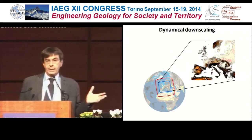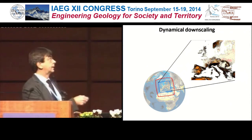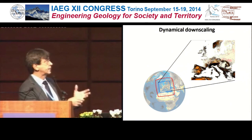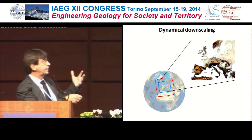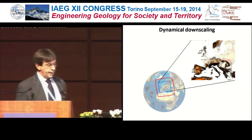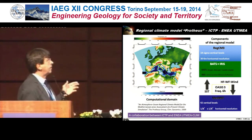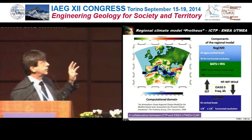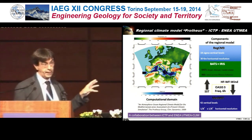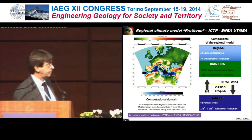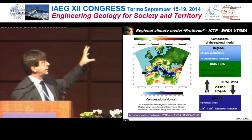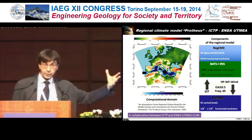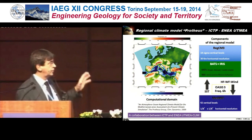In dynamical downscaling, you take a piece of the globe and nest a regional model into a global model to get higher resolution, with more or less the same equations and physics. An example is the Proteus model, which is a blend of RegCM3 — one of the most popular atmospheric climate models, developed at ICTP — and an ocean model, the MIT model. It's a joint venture of CMEA and ICTP, giving a resolution of about 30 kilometres. This is a hydrostatic model, so it doesn't include much new physics beyond the global models, but has higher resolution.